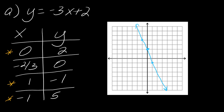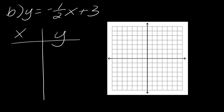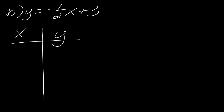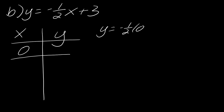Now let's look at what happens when you have a fraction in the equation, because that's pretty common. Again, plugging in 0 for x is probably one of the best choices. So I get y = −(1/2)(0) + 3. That term drops out and I'm just left with y = 3. Nice and simple.